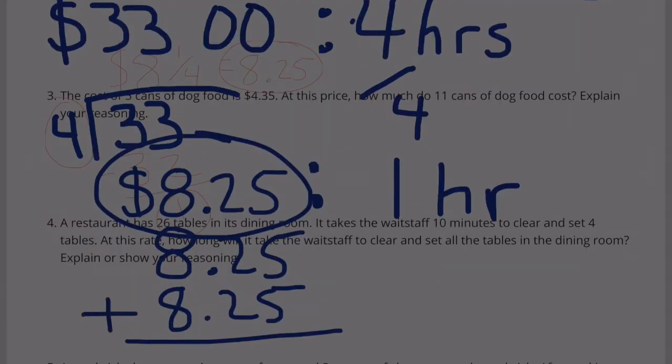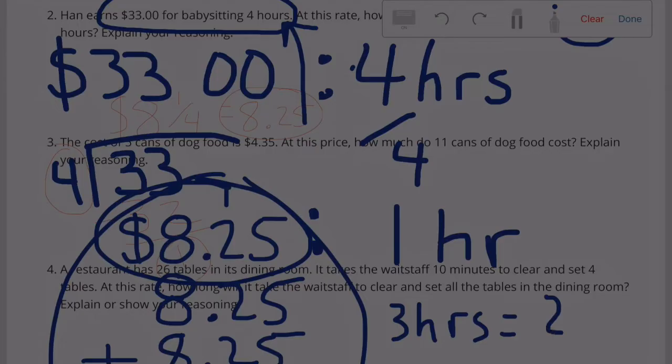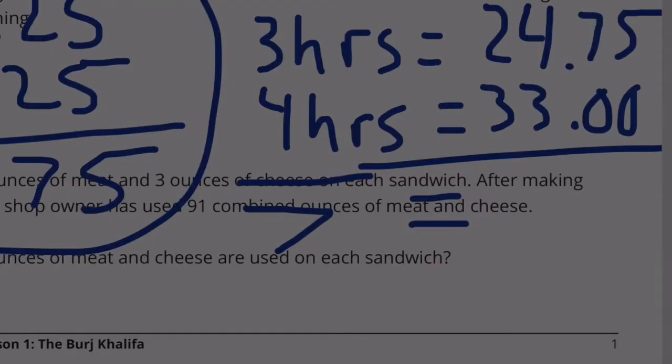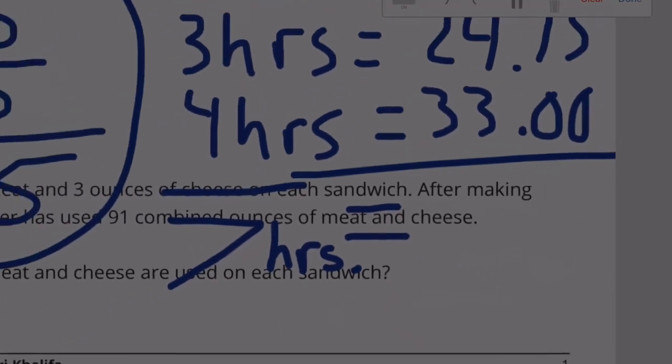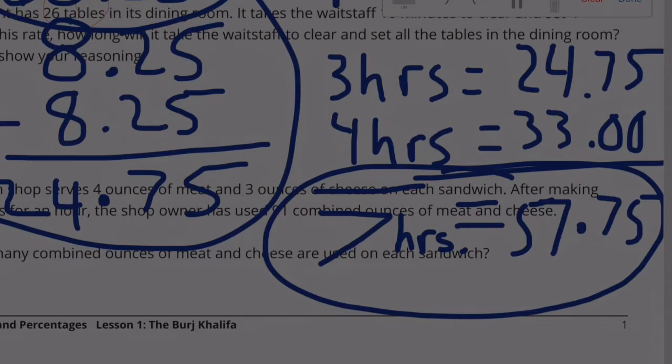So this is how much he's going to make in 3 hours. We can add that to the 4 hours. So in 3 hours, he'll make $24.75. In 4 hours, he makes 33. 3 hours plus 4 hours is 7 hours. So 7 hours worth of work, he will earn $57.75.